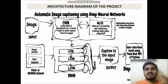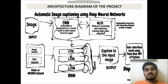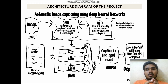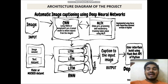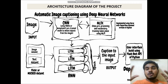This is the architecture of my project. In simple terms, if you give an image to the system, the system automatically predicts what is happening in the image, or it generates a caption for that image. That is what my project does. Let us now understand this in a technical manner.